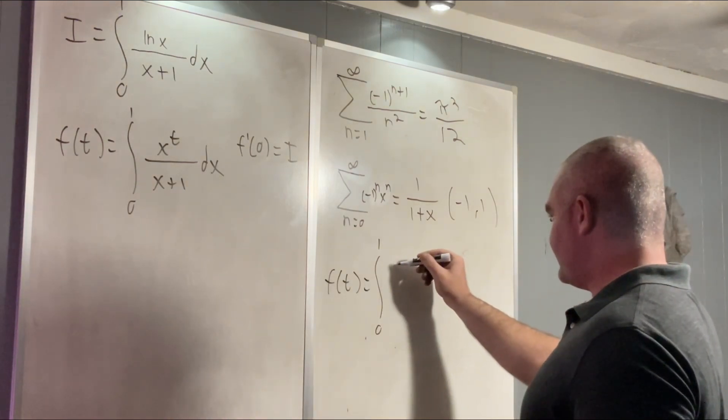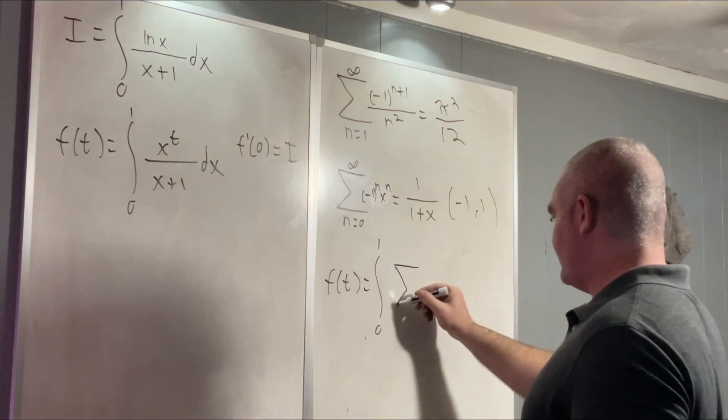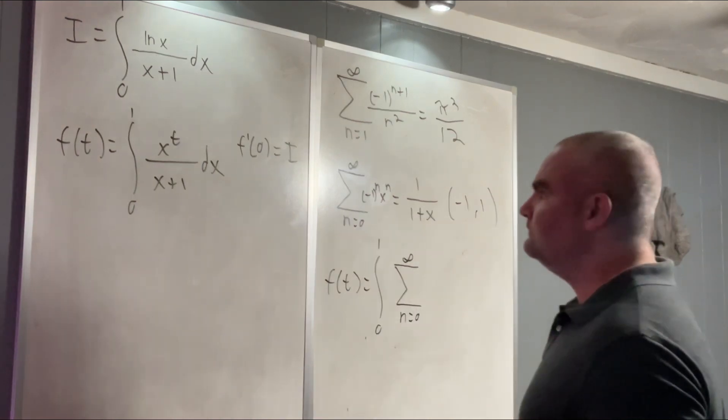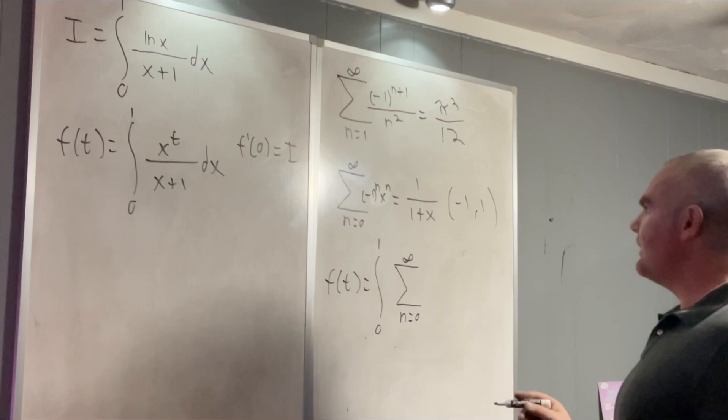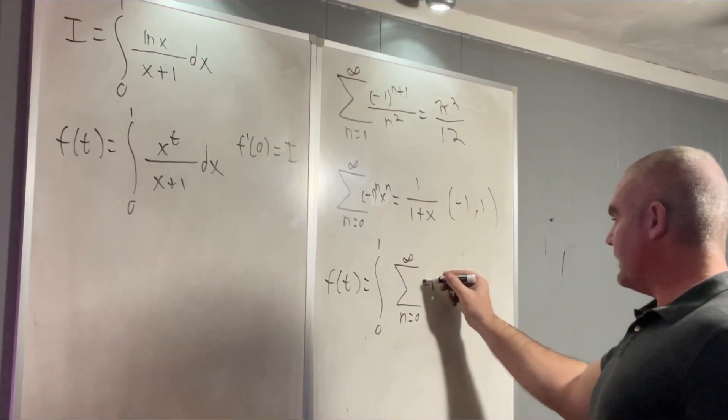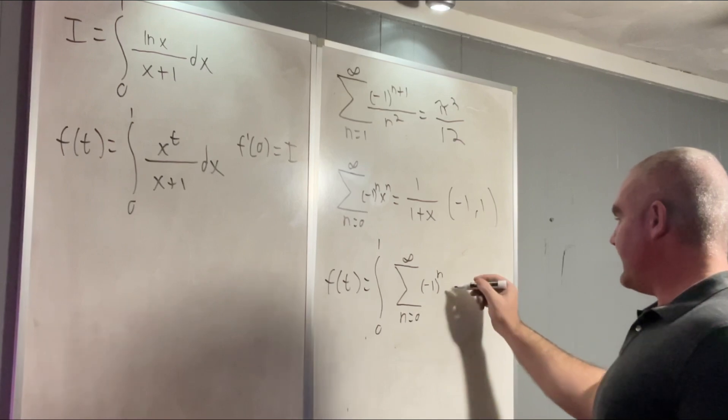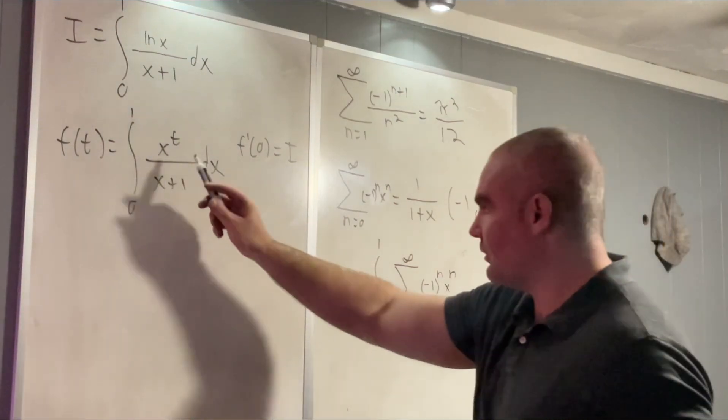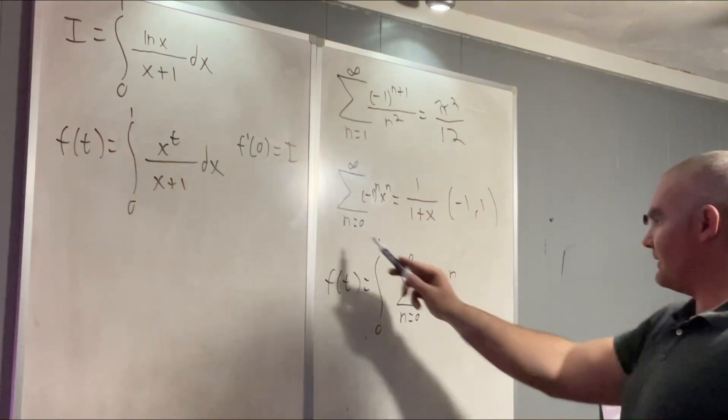That takes care of our 1 over x plus 1 because they're equal. And then we have an x to the t, but I'm just going to bring that inside our sum as a plus t.